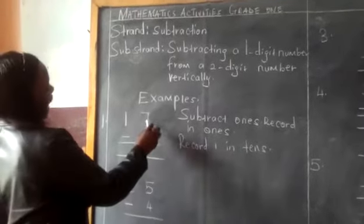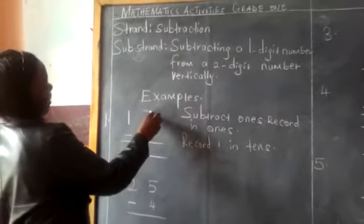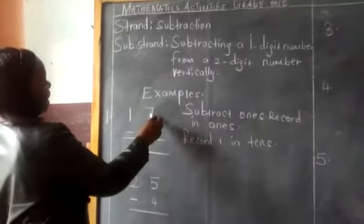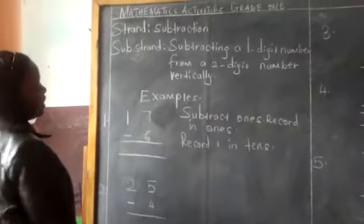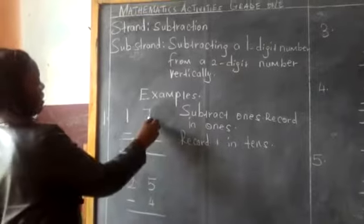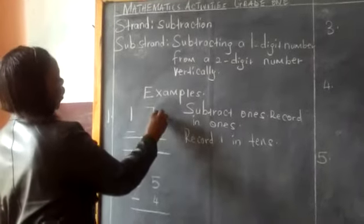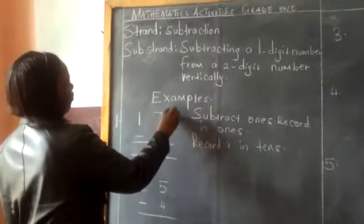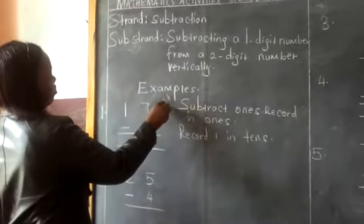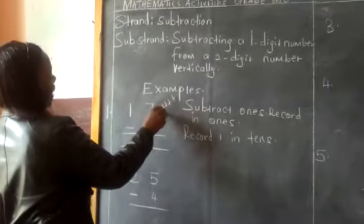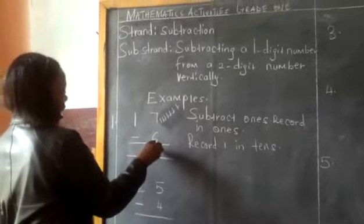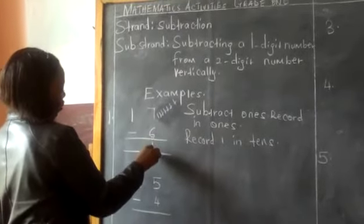Now, we are to start here at the side of ones. This is the side of ones. We start by subtracting seven take away six, and we record here on the side of ones. We have number seven take away six — we count and take away six. The remaining is one.